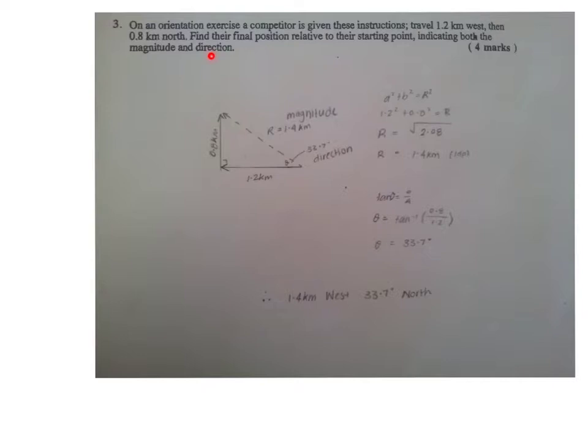If the question asked to give your answer and state the direction, then you would have to give the statement like this. So you've done West 33.7 degrees to the North. You could have also gone North and 56.3 degrees West. So North 56.3 degrees West.